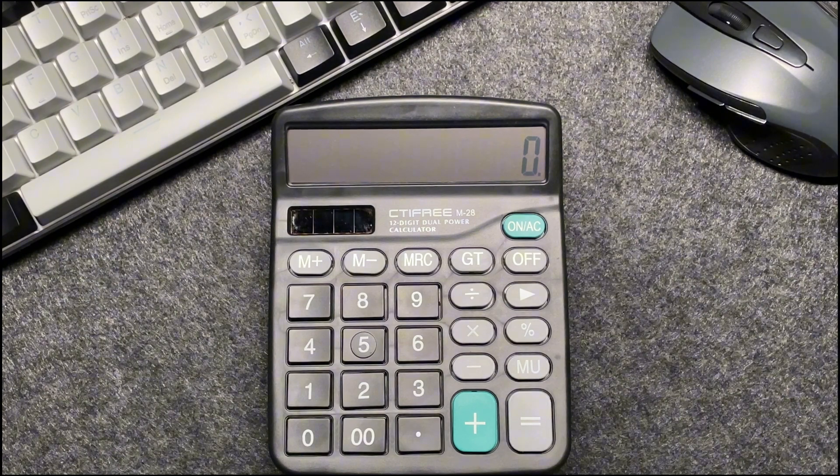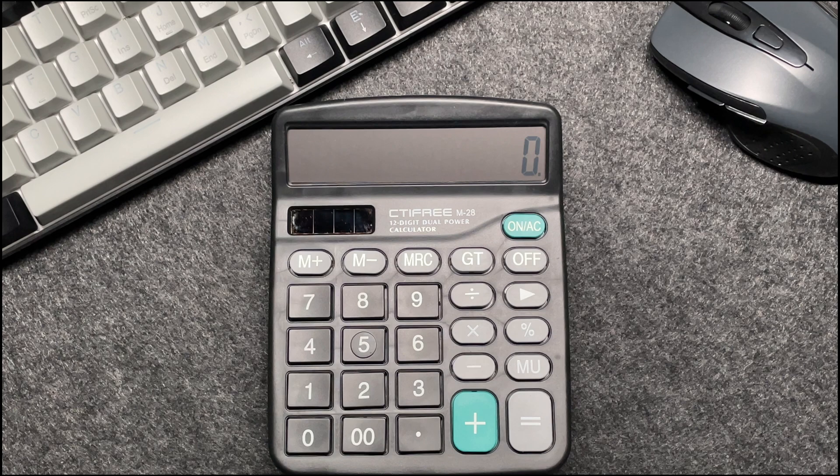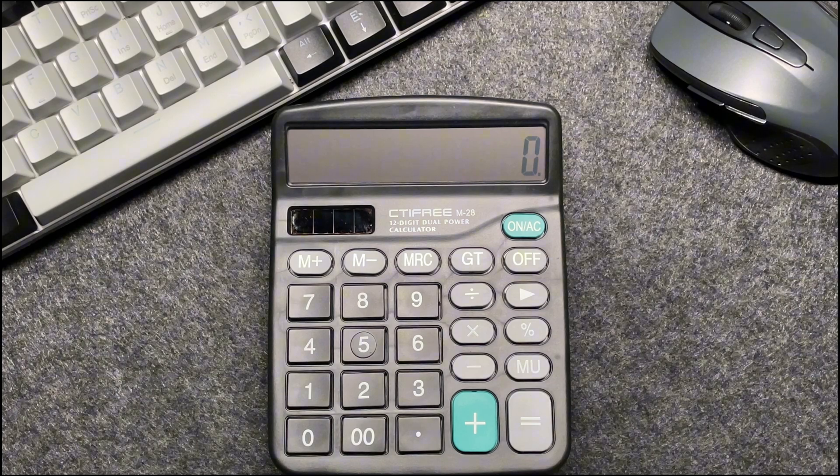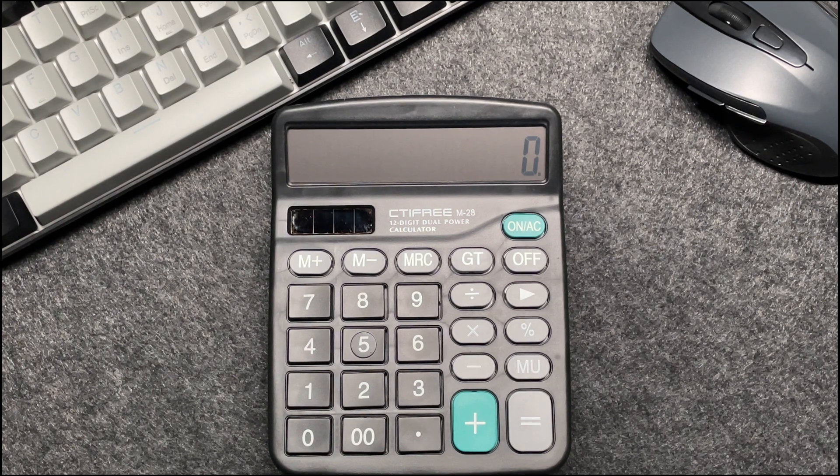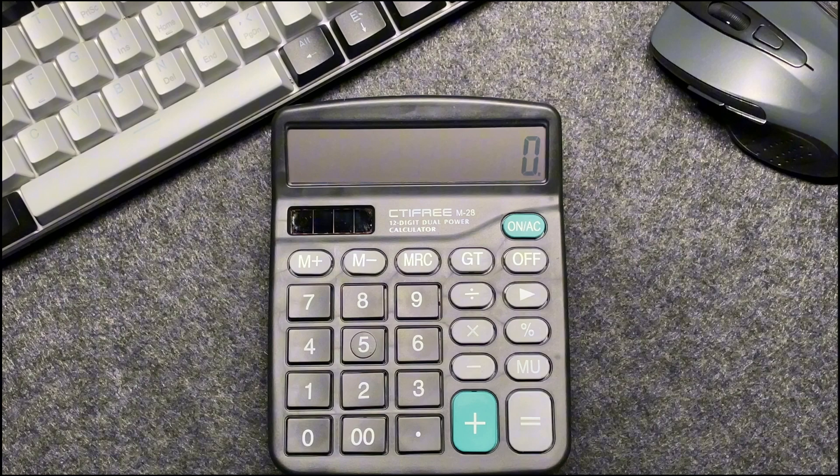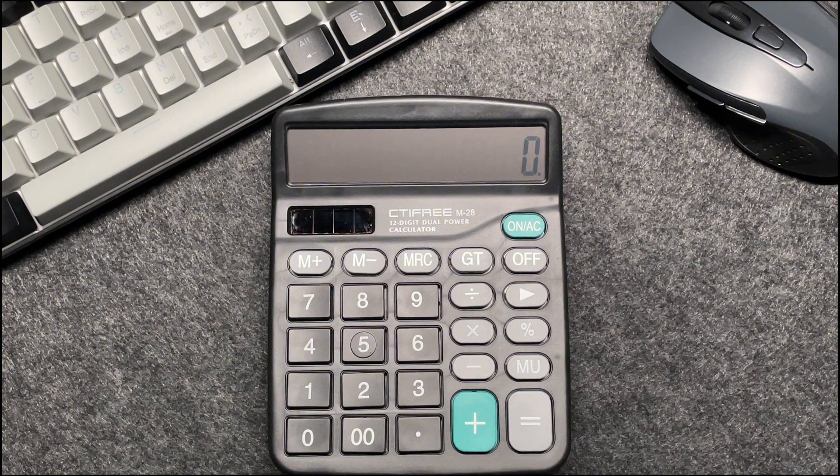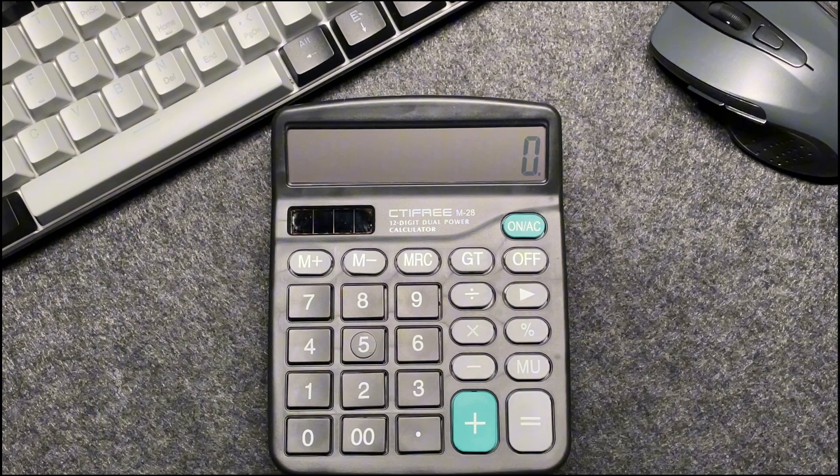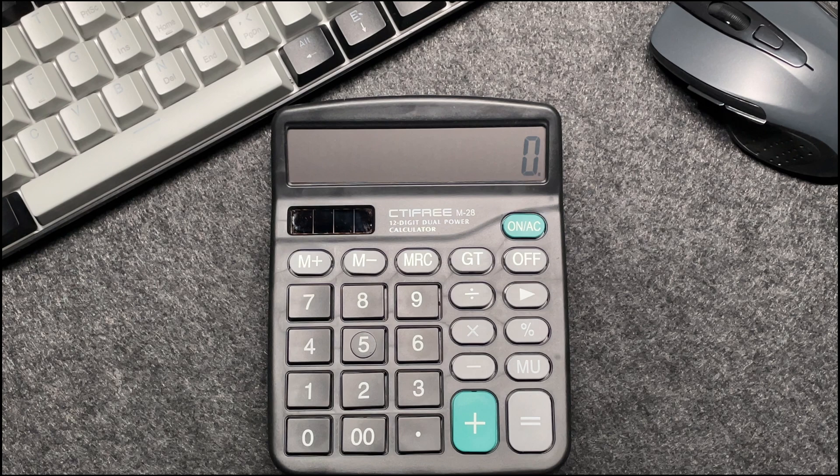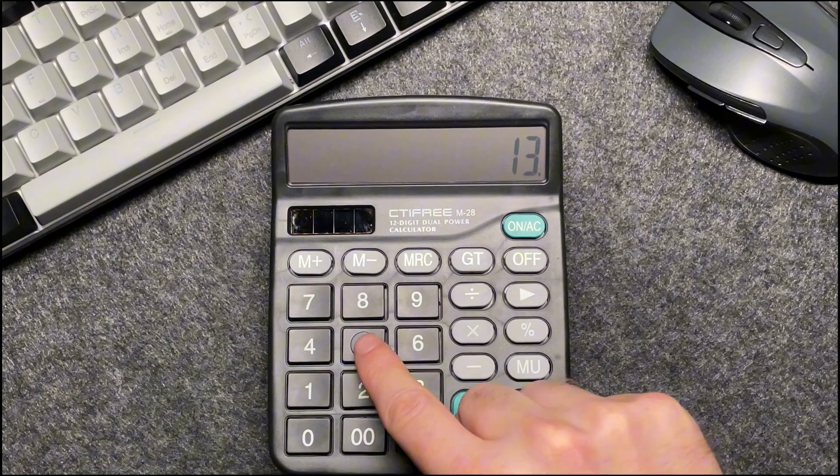Suppose you have an item that costs 1357 and you want to find out what the final price will be after applying a 75% discount. Here's how to do it in just three easy steps. Enter the original price 1357